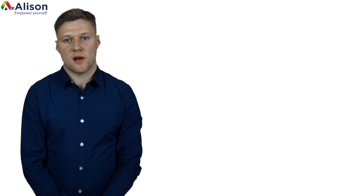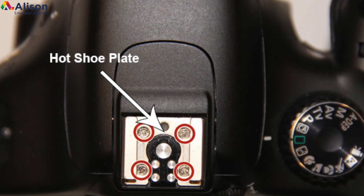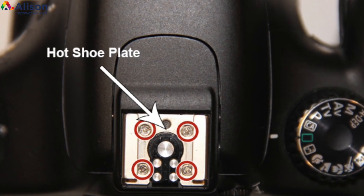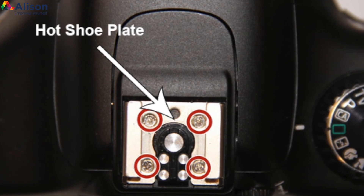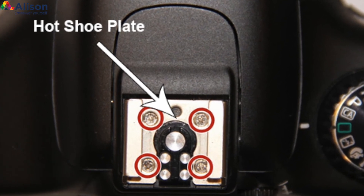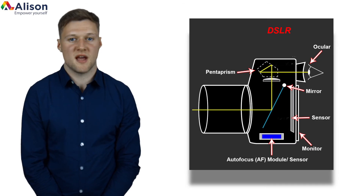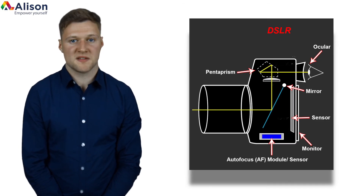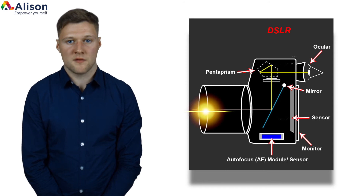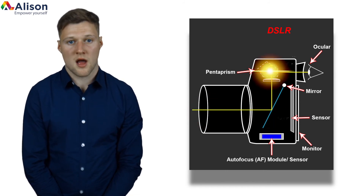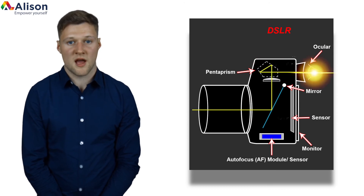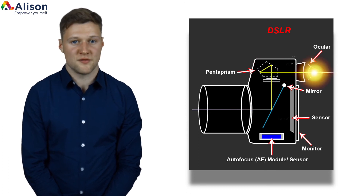Some cameras will have a hot shoe, which is useful when adding an external flash or microphone. Within the DSLR camera, the process involves light passing through the camera lens, hitting the mirror, and bouncing through the pentaprism and out through the viewfinder.